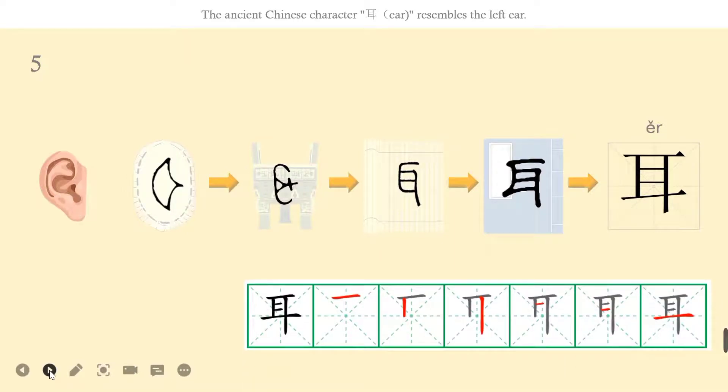Let's learn how to write. Ěr has six strokes. The first stroke is héng. The second stroke is shù. The third stroke is shù. The fourth stroke is héng. The fifth one is héng, and the sixth one is héng.